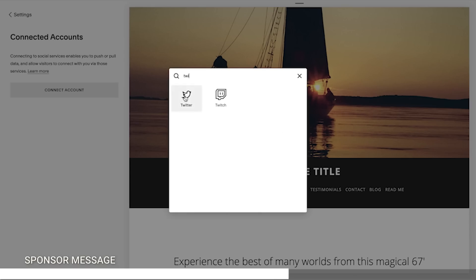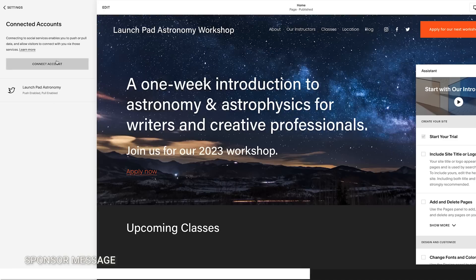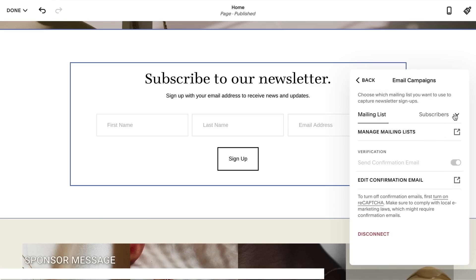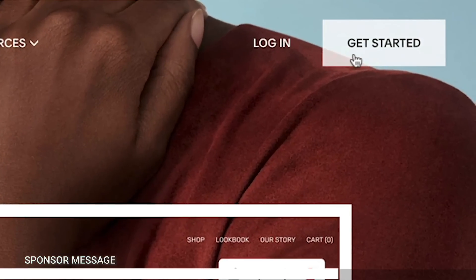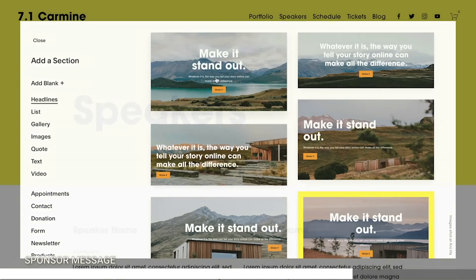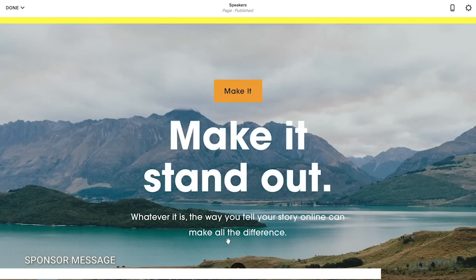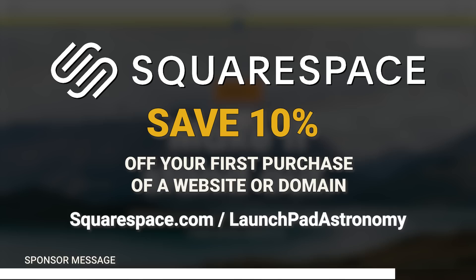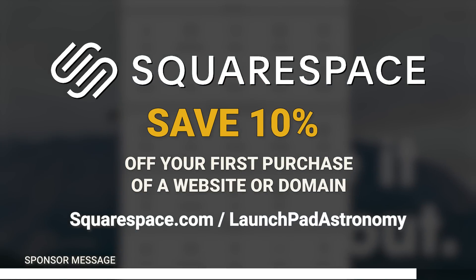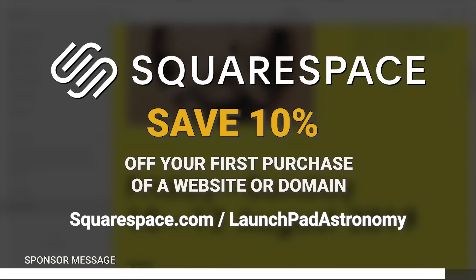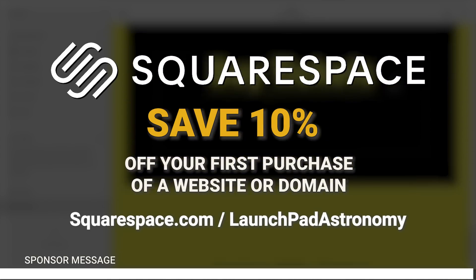Connect your social media accounts to display posts from your social profiles right on your website. Setting up a mailing list is a breeze. Start with an email template, apply your brand assets, and you're on your way. If you need a website done fast and well, then you owe it to yourself to go to squarespace.com/launchpadastronomy for a free trial, and you can save 10% off your first purchase of a website or domain. You'll find that link in the description below.